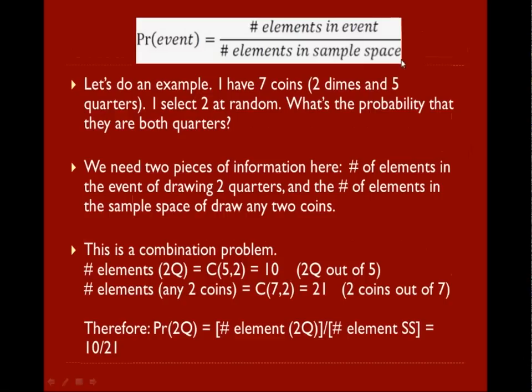Here's the formula: probability of an event is the number of elements in the event divided by the number of elements in the sample space.